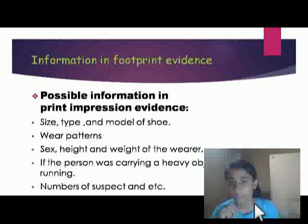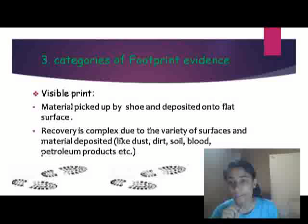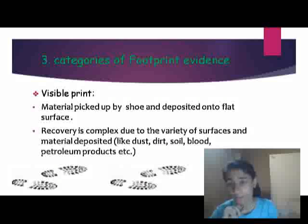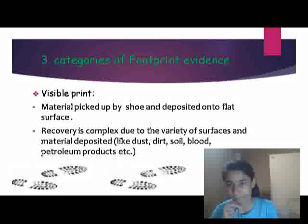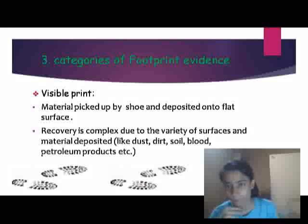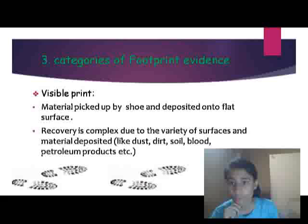Footprint impressions can also reveal the number of suspects. The categories of footprints are divided into three types: visible, latent, and patent. Visible prints are those which can be seen by the naked eye. They are produced by contact with dust, soil, or blood from a surface, and recovery can be complex due to the variety of surfaces and materials such as dust, dirt, soil, and petroleum products.